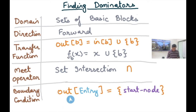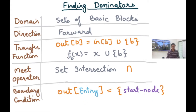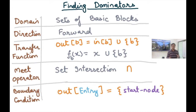The boundary condition is that out(entry) is the singleton set containing the start node. Notice I'm not initializing it to the empty set — I'm initializing it with a singleton set because a node dominates itself. I want to capture that property. So even for the entry block, the start node dominates itself, so I should start with that.